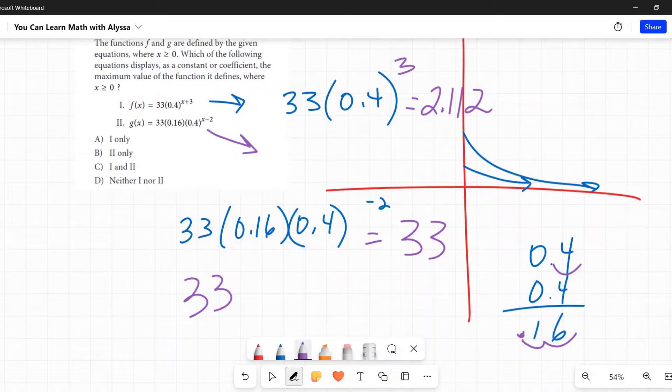Okay, now that we've done this math, let's go back and find out what exactly it says: which of the following equations displays as a constant or coefficient the maximum value of the function? What that means is this result that we got, 2.112, that is the maximum value there. 33, that's the maximum value there. If I go back and look at this original one, is 2.112 anywhere in there as a constant or coefficient in that equation? No, there is no 2.112 anywhere in that function.